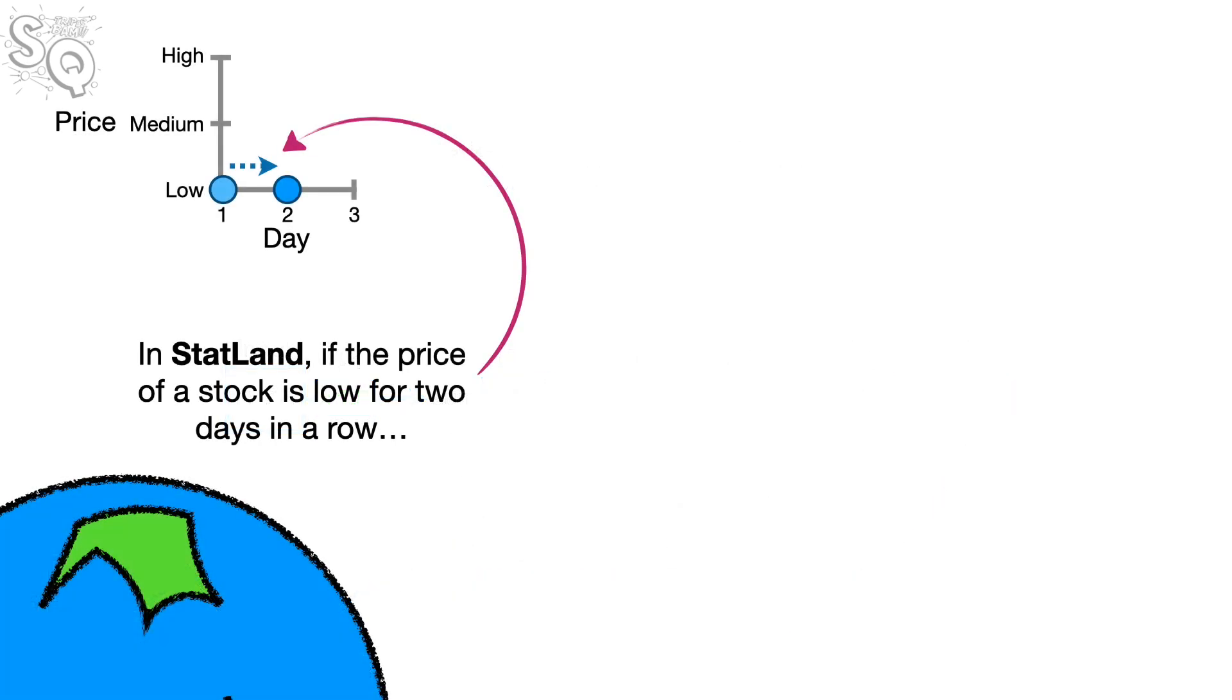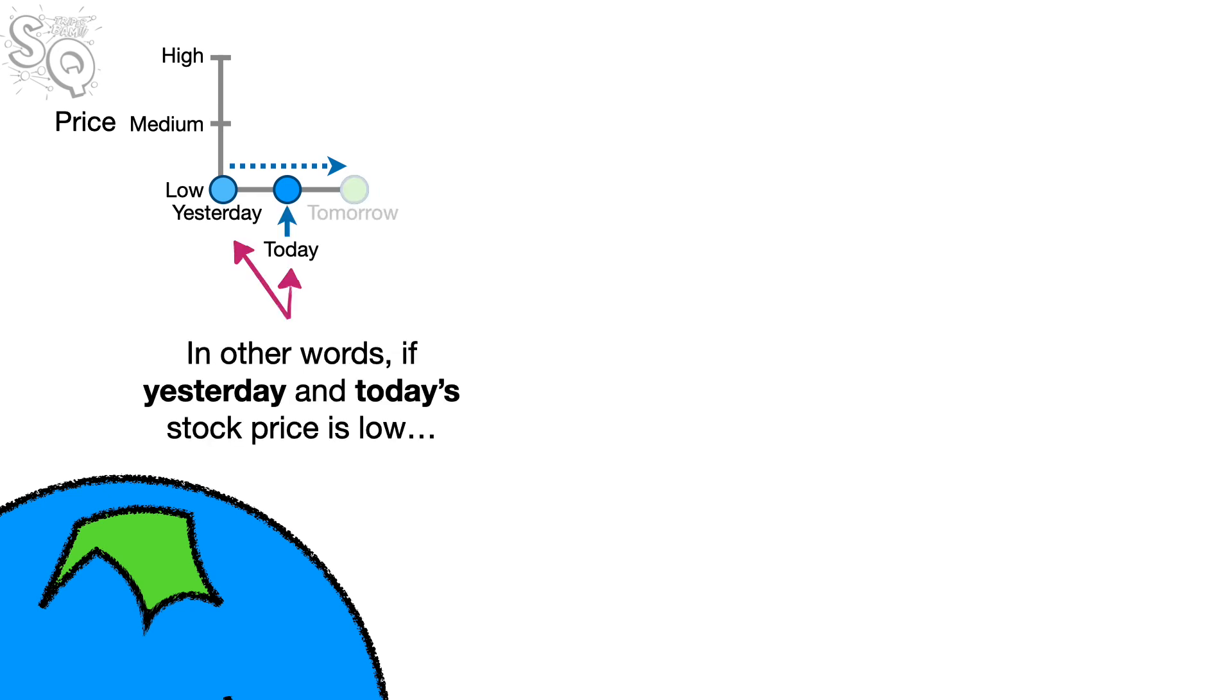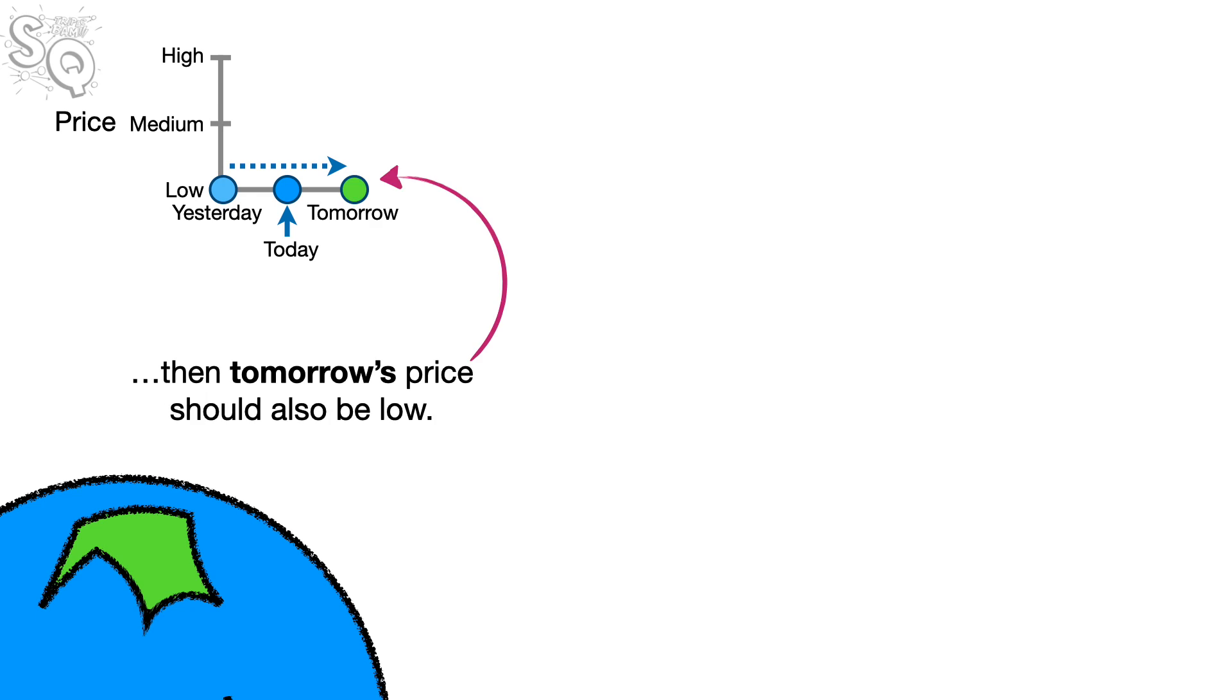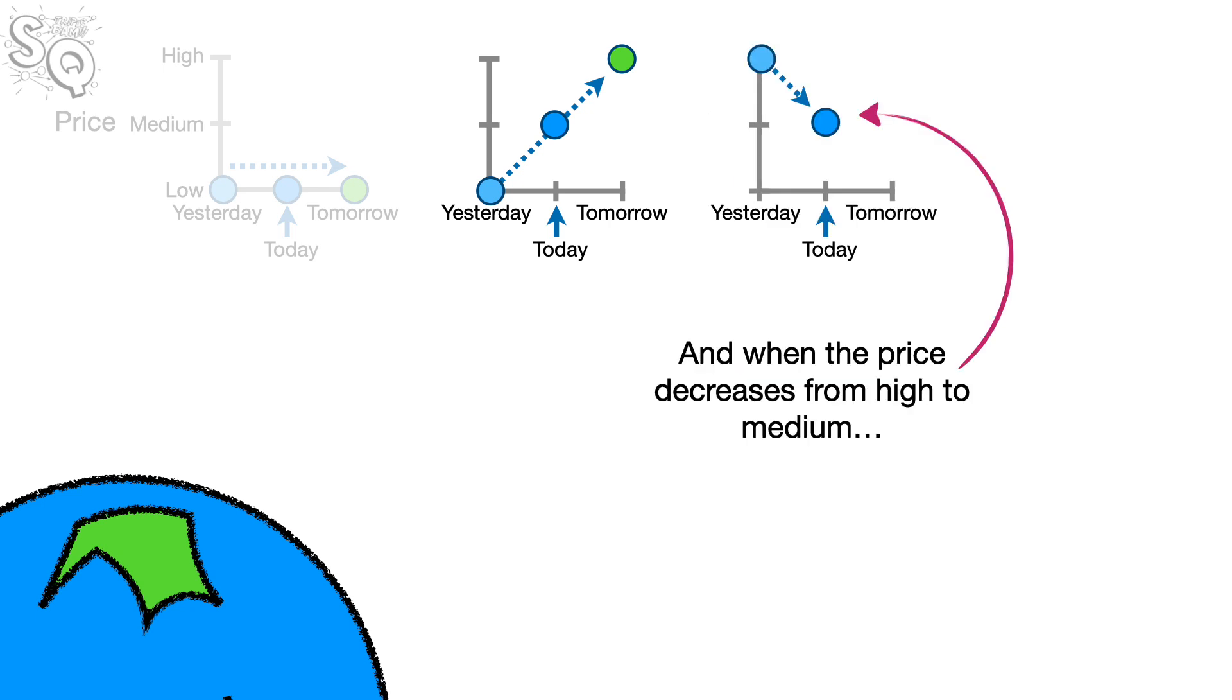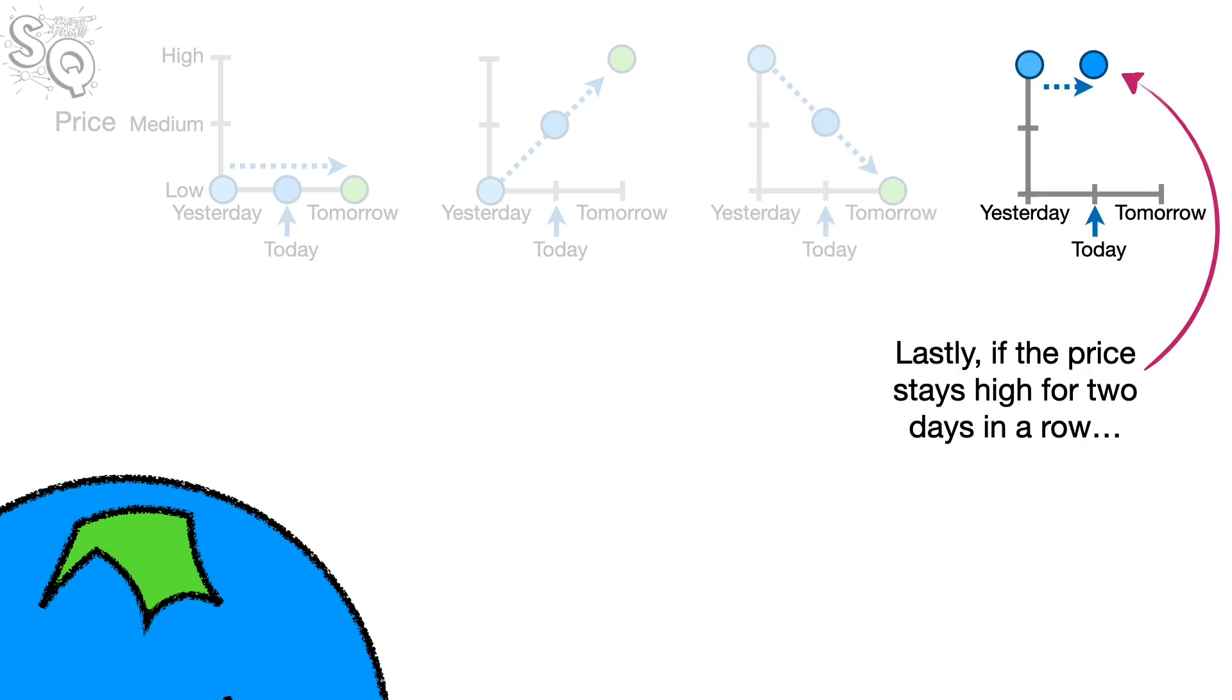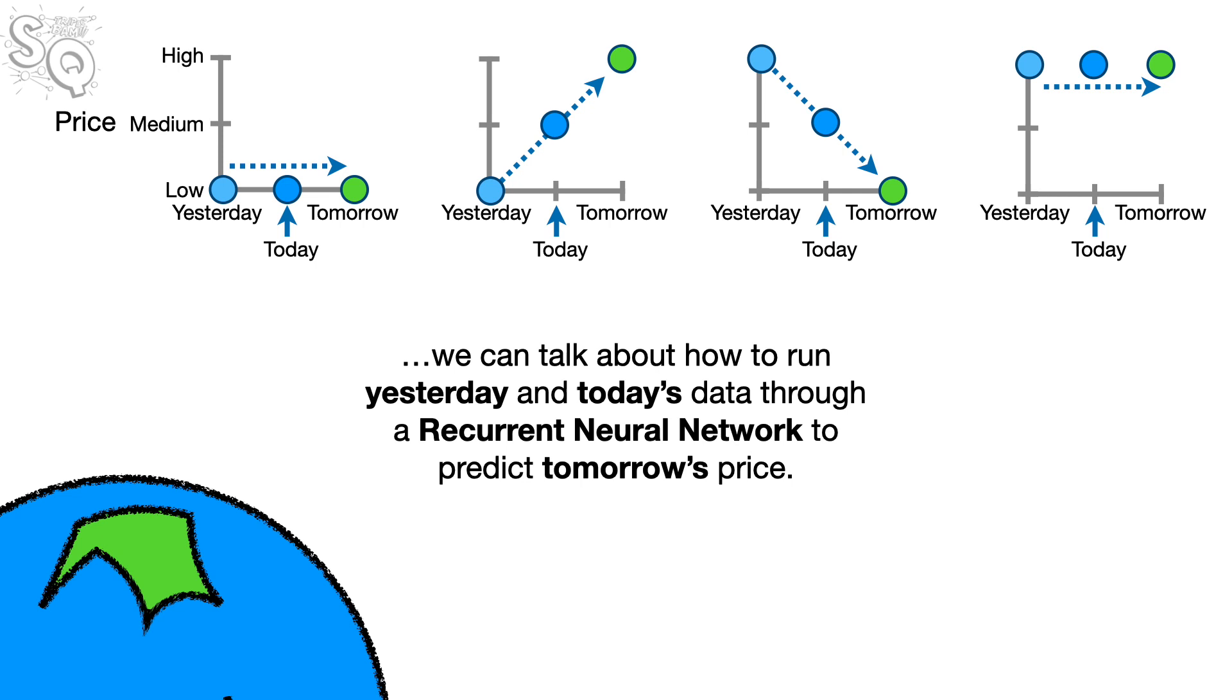In StatLand, if the price of a stock is low for two days in a row, then, more often than not, the price remains low on the next day. In other words, if yesterday and today's stock price is low, then tomorrow's price should also be low. In contrast, if yesterday's price was low and today's price is medium, then tomorrow's price should be even higher. And, when the price decreases from high to medium, then tomorrow's price will be even lower. Lastly, if the price stays high for two days in a row, then the price will be high tomorrow.